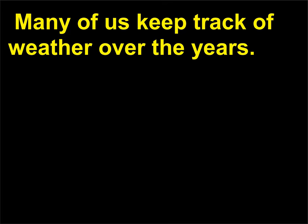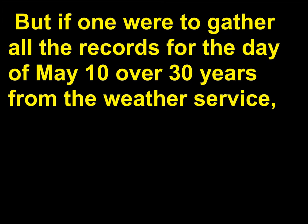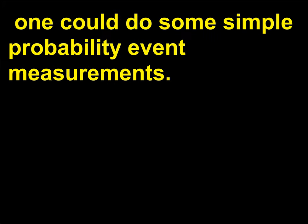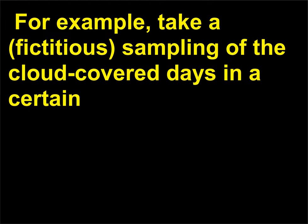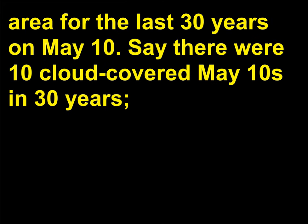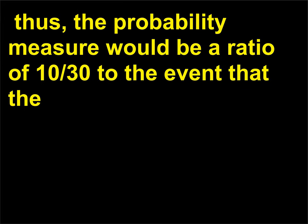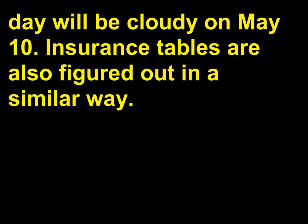Another example is weather records. If one were to gather all the records for the day of May 10th over 30 years from the weather service, one could do some simple probability event measurements. For example, take a fictitious sampling of the cloud-covered days in a certain area for the last 30 years on May 10th. Say there were 10 cloud-covered May 10ths in 30 years; thus the probability measure would be a ratio of 10/30 to the event that the day will be cloudy on May 10th.